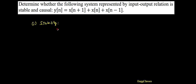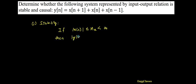Let me write the same thing in mathematical form. Consider the input and make it bounded. So I will consider the magnitude of x(n), which is less than or equal to mx, where mx is any finite number less than infinity. If x(n) is finite, then check the output: is the magnitude of y(n) less than or equal to mx, where mx is any finite number less than infinity? If yes, the system is stable. Now consider the given system — the magnitude of y(n) is equal to...